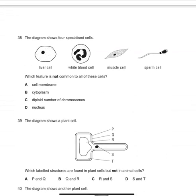Next question: the diagram shows four specialized cells. Which feature is not common to all these cells? So we have to find a feature...